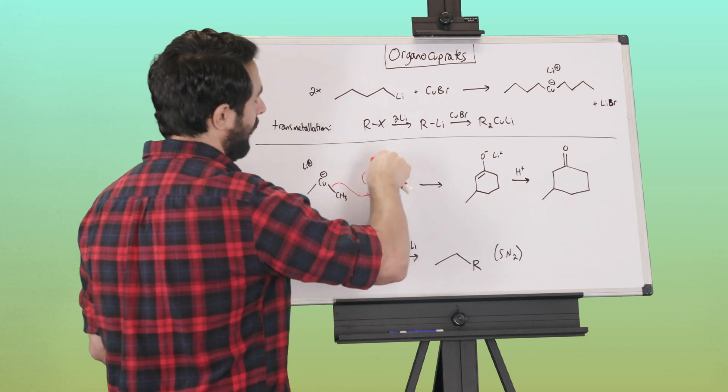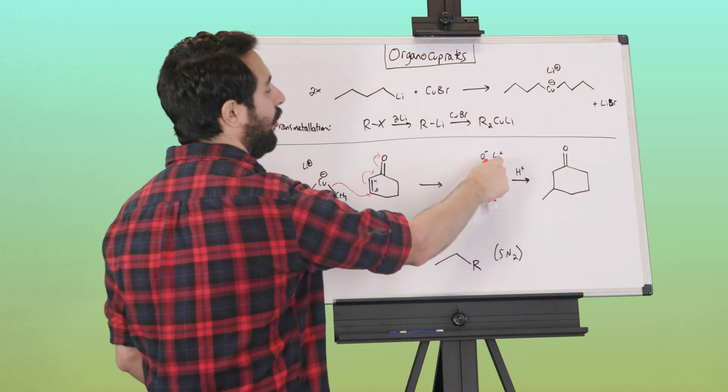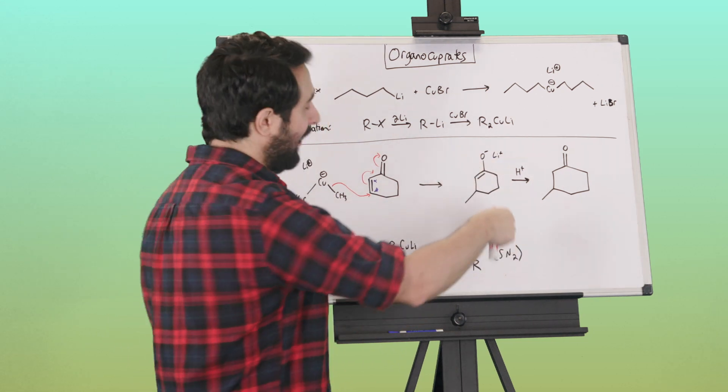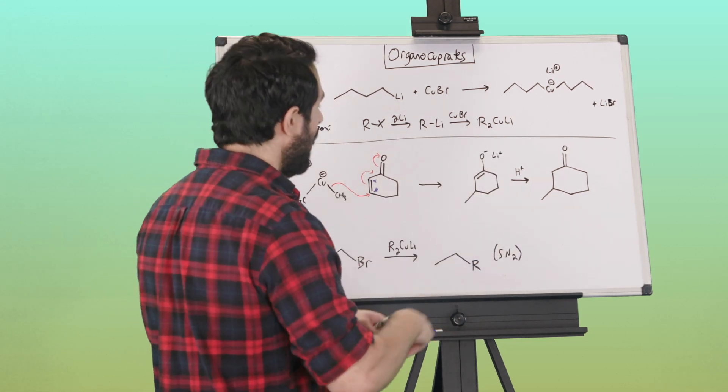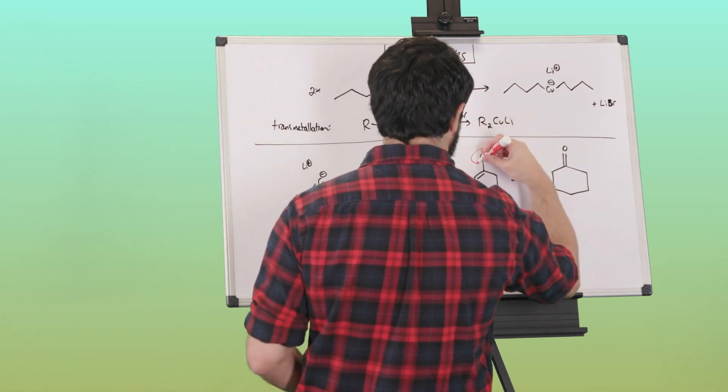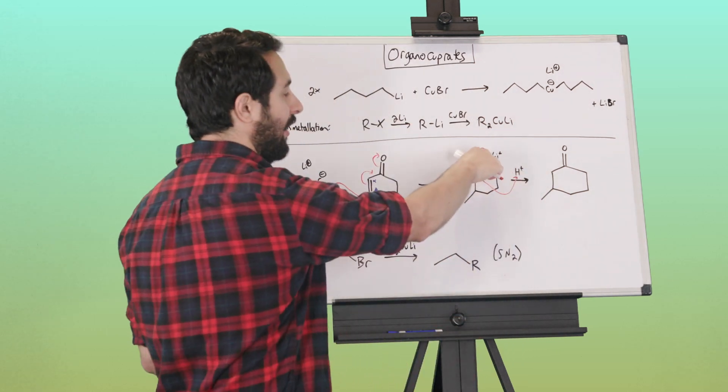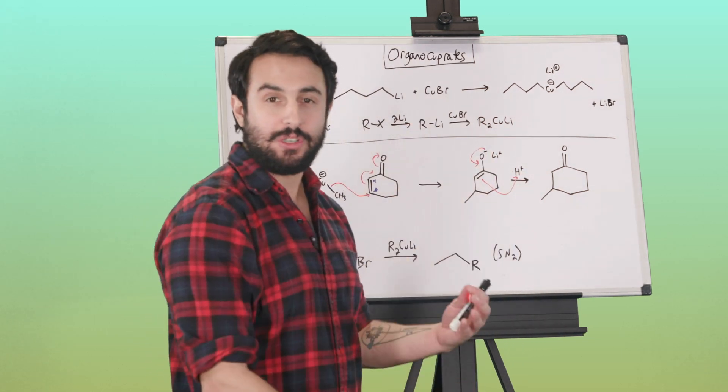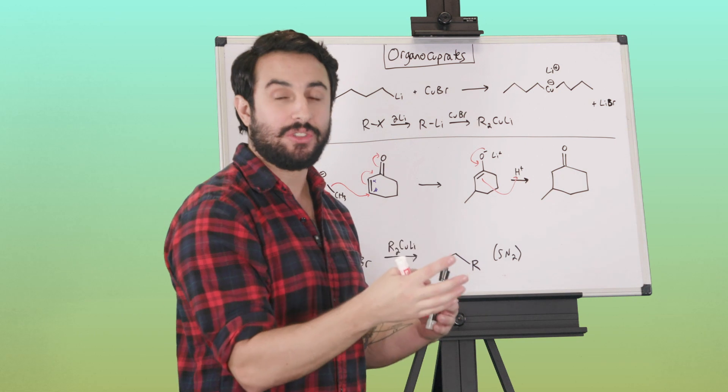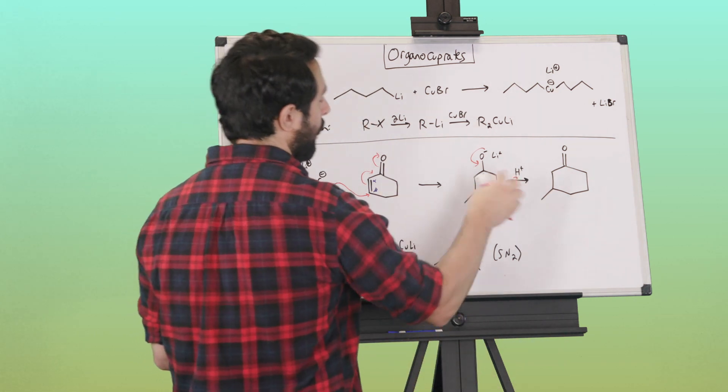The methanide is going to attack here, kick that pi bond up there, kick that pi bond up there, and here we are. Certainly the lithium counterion is going to hang out by the oxyanion. But then all we need is some aqueous acidic workup. We're going to reform the carbonyl. You could also protonate right there, but then of course that would tautomerize. We know that enols quickly tautomerize to ketones typically.